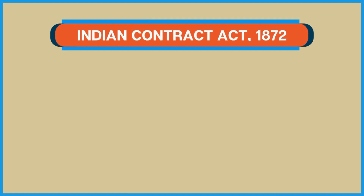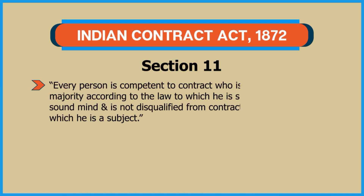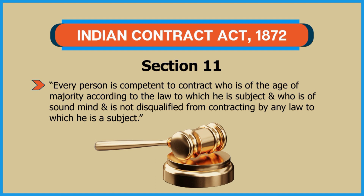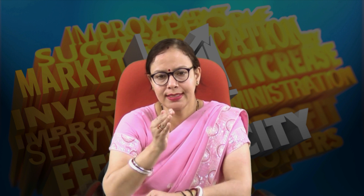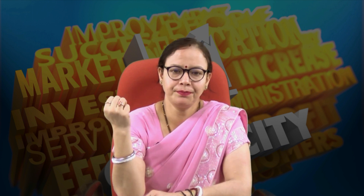As per the Indian Contract Act 1872, Section 11 says: every person is competent to contract who is the age of majority according to the law to which he is subject, and who is of sound mind, and is not disqualified from contracting by any law to which he is a subject. This definition can be understood in three parts.